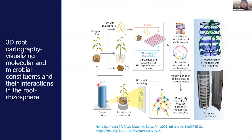We are using the XCT platform here at EMSL to image these roots without disturbing them. Once we have captured our root images, we can use this system for downstream processes. We use these riser grids to preserve the coordinates of the root system and dissect them for either metabolites or for 16S sequencing. Because we know where each root piece is coming from, we are now able to map that information back to the reconstructed root.